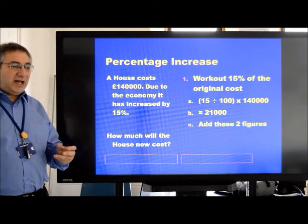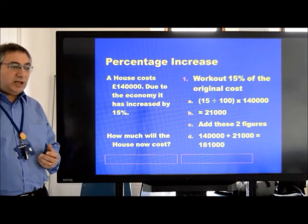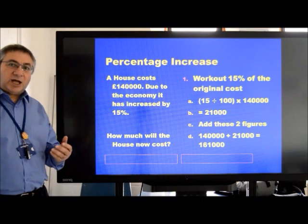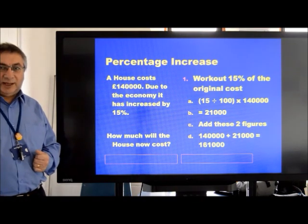We now need to add those two figures together, because we are looking for a percentage increase. So one hundred and forty plus twenty-one equals a hundred and sixty-one thousand pounds for the new price of the house.